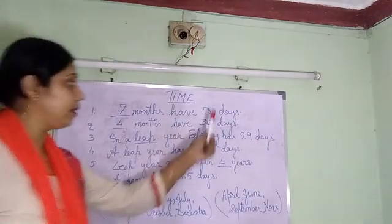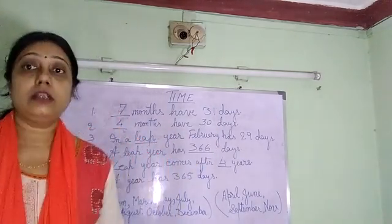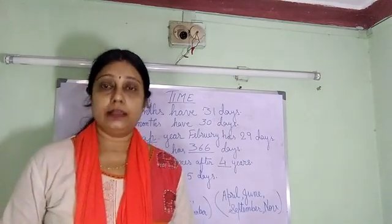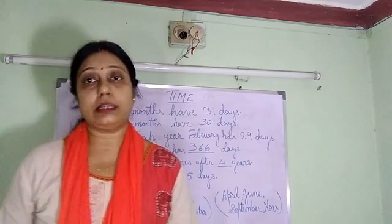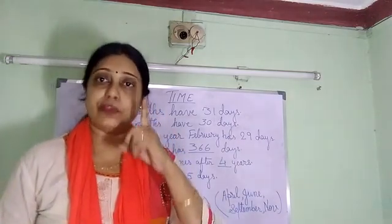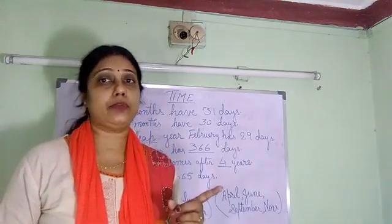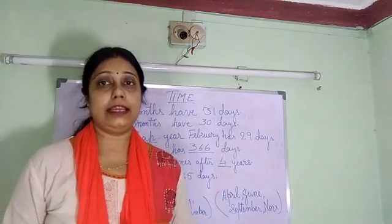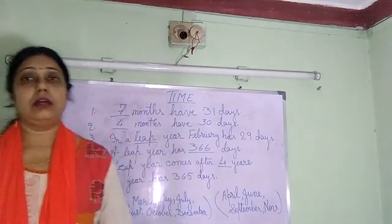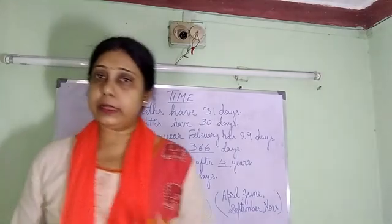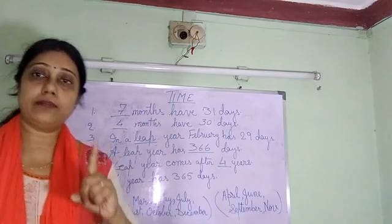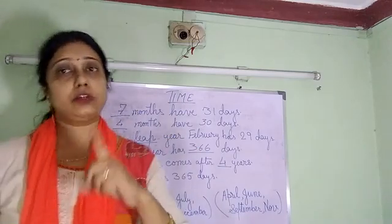7 months have 31 days. We already know there are 12 months in a year. Out of 12 months, 7 months have 31 days, 4 months have 30 days, and 1 month — February — either has 28 days or 29 days. That depends on the leap year, which I will discuss later.